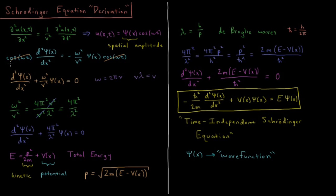We have cosine ωt on both sides, so we can cancel that out. Moving the term to the other side and adding ω²/v² ψ(x) to both sides, we get: the second derivative with respect to x of the wave function plus ω²/v² times ψ(x) equals zero.